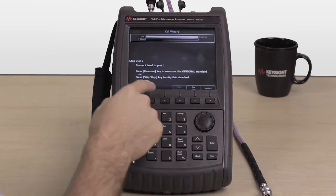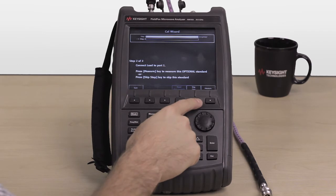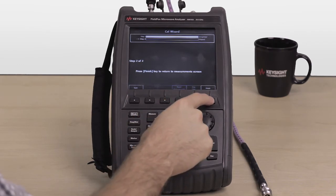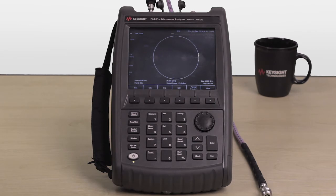That's once this calibration is complete. We're going to skip this step because we don't want to connect the mechanical standard right now. Press Finish. And what do you know? We have our impedance set at around infinite ohms.